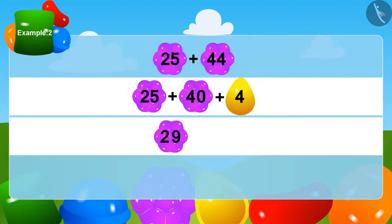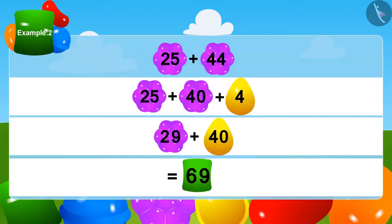Lastly, how much is 29 plus 40? Absolutely right, 69. Appu got a total of 69 mangoes.